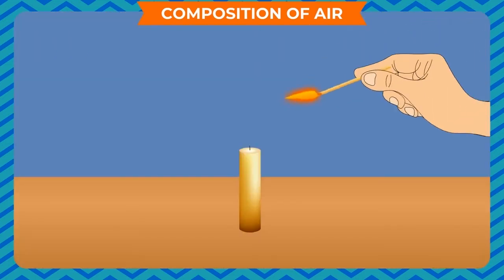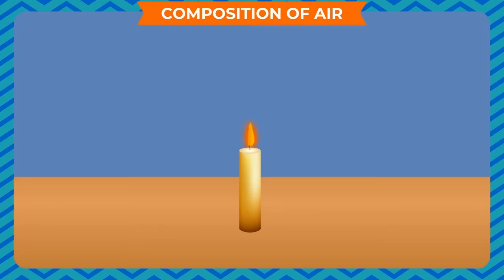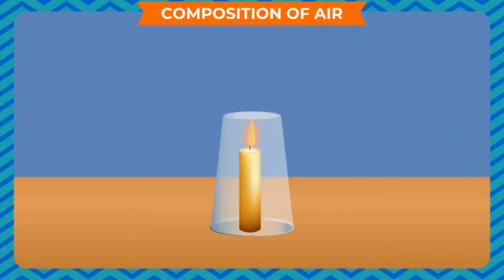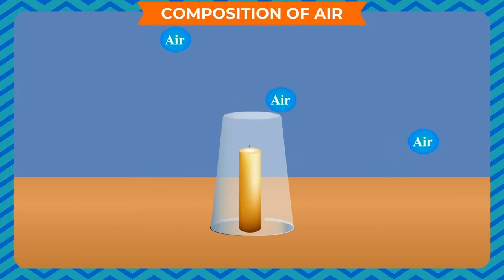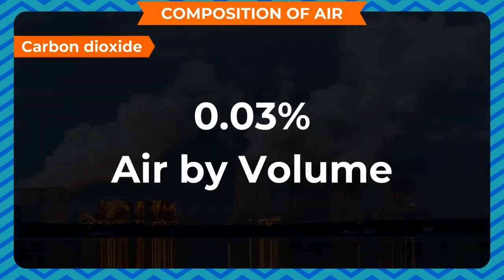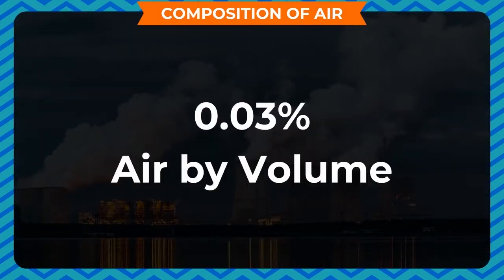Take a candle and place it on the table. Light the candle with a matchstick and let it burn for a few seconds — you can see it burns continuously. Now cover the candle with a transparent glass. The flame of the candle goes off slowly. That means the oxygen in the air supports burning; nothing can be burned without air.